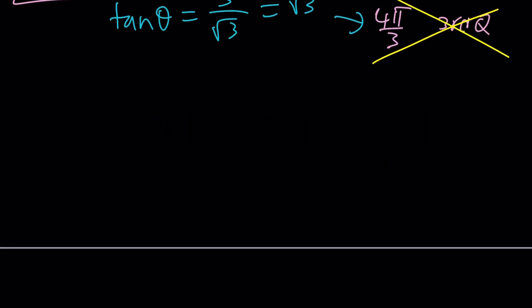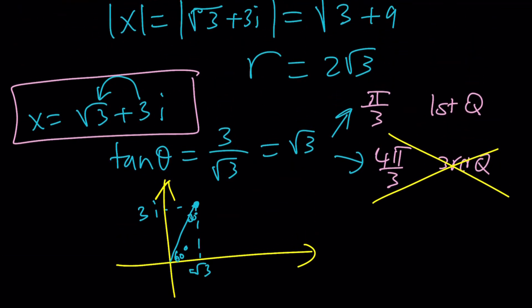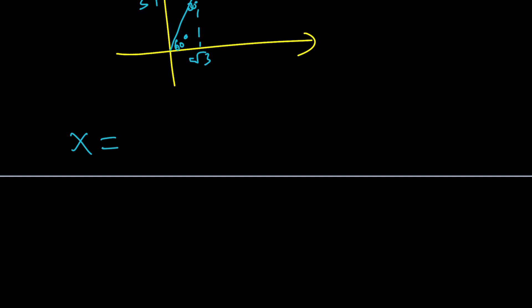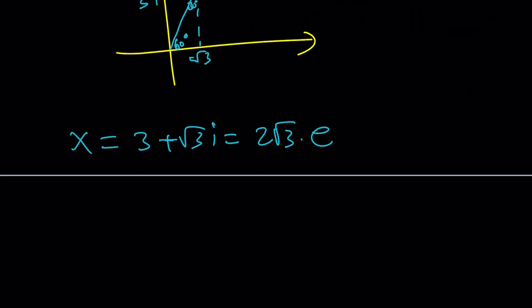Now, if you don't like this method, you can just plot this as root 3 plus 3i. It's going to look something like this, root 3 plus 3i. Then look at this angle. Obviously, this is going to be a 30-60-90 triangle. That way, you can also find it pretty easily. And of course, if it's in a different quadrant, it's going to be even easier because you can use this as a reference angle. So my number, which is root 3 plus 3i, can be written as 2 root 3 times e to the power i pi over 3.